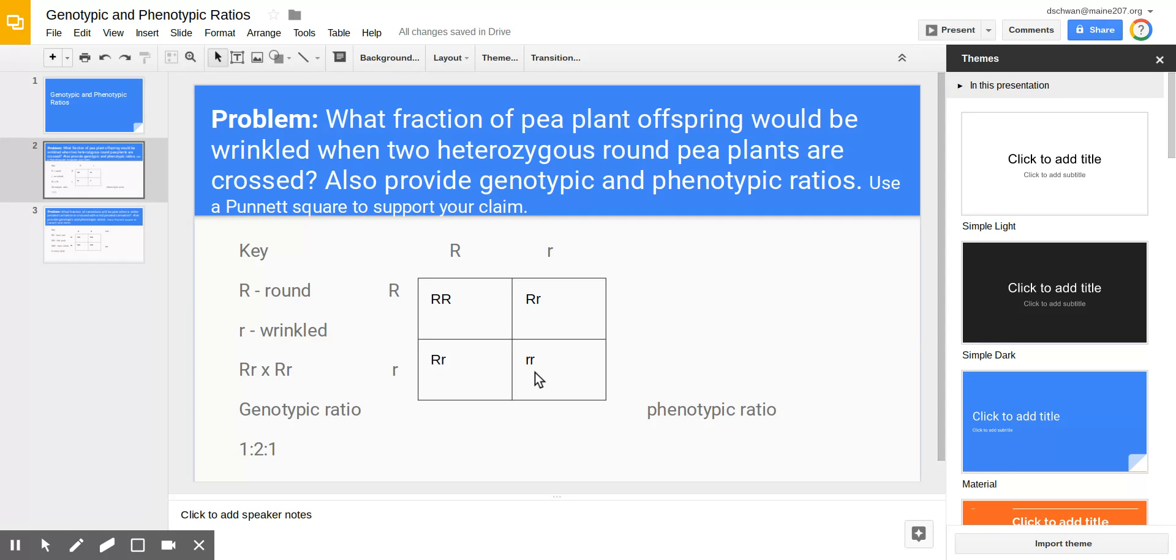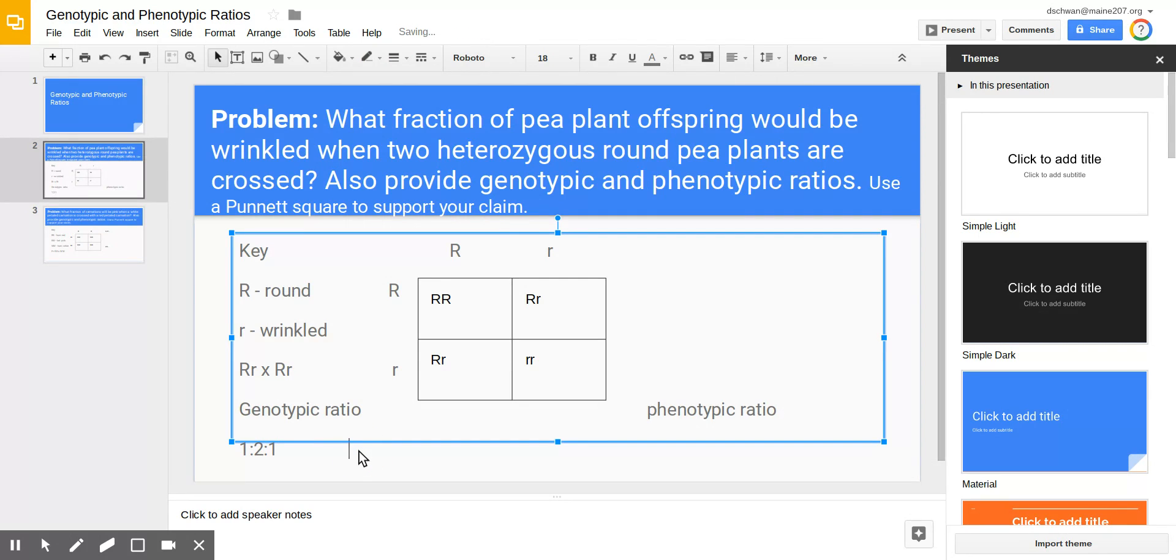Wrinkleds we know for sure what their genotype is. The only way that you could have a wrinkled pea is that particular pea has to have homozygous recessive genotype. So the phenotypic ratio in this particular scenario would be a three to one phenotypic ratio. There are three offspring that have the dominant phenotype to every one offspring that would have the recessive.